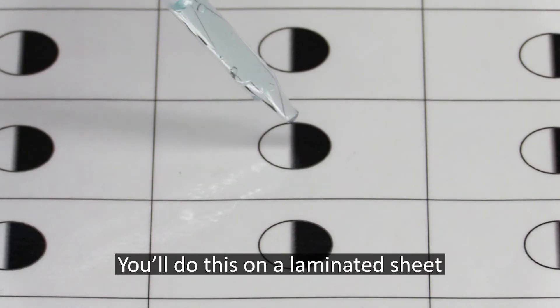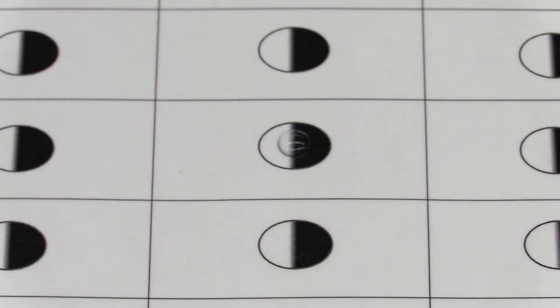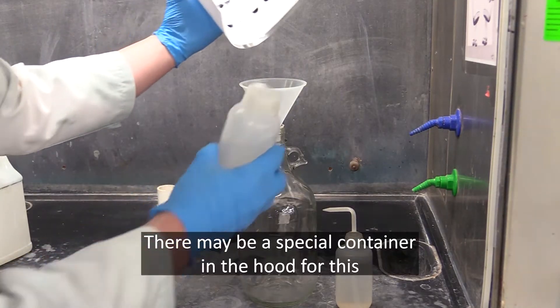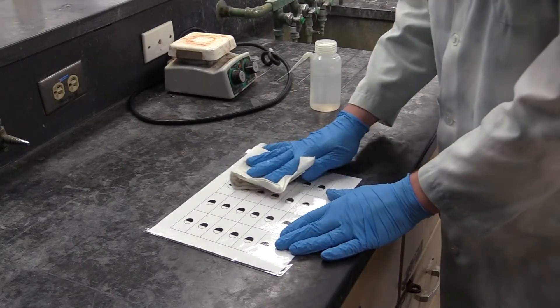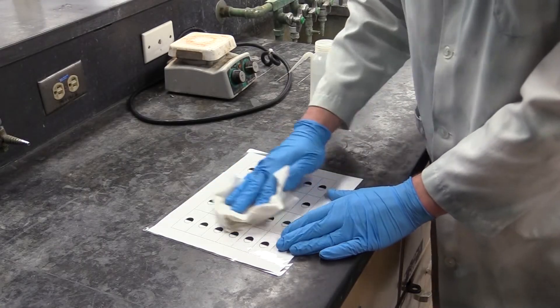To perform this experiment, you will mix the salt solutions together on a laminated sheet. This sheet has black and white circles on it that will make it easier to observe a precipitate if one forms. When you're done, rinse the sheet off into the lab room's waste container, and wipe it with a damp paper towel to get any residue off it.